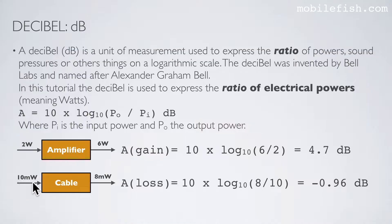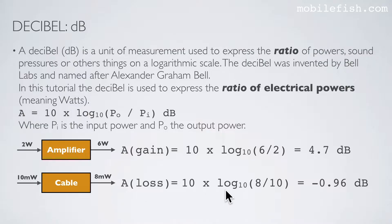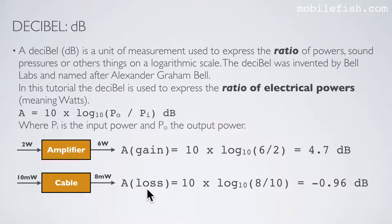Here is another example: the input power is 10 mW and the output power is 8 mW. So in this example there is a loss, because the output power is less than the input power. The equation is now 10 times log base 10 of 0.8 equals minus 0.96 dB. Please note: if it is a positive value, it is a gain; if it is a negative value, it is a loss.